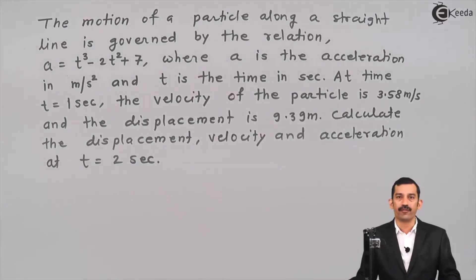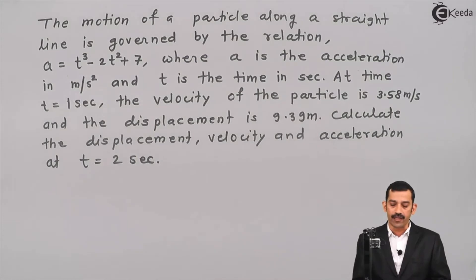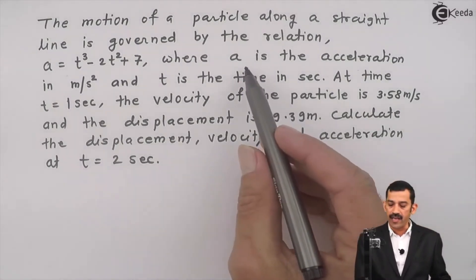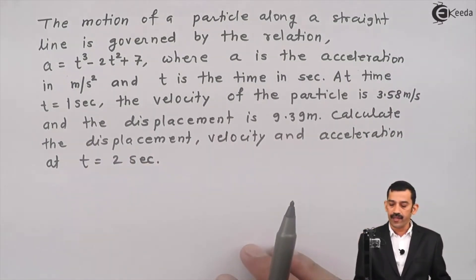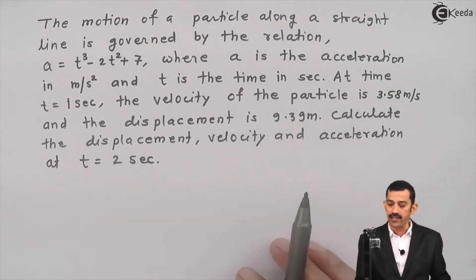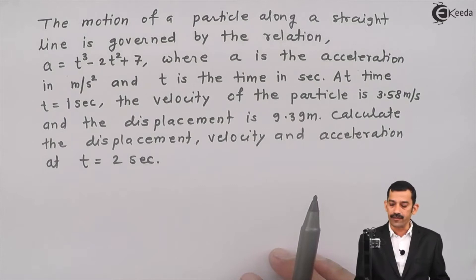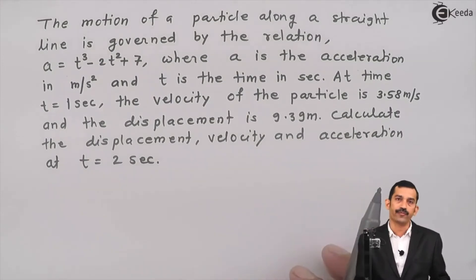Hi friends, we will solve a problem on variable acceleration. The motion of a particle along a straight line is governed by the relation a = t³ - 2t² + 7, where acceleration a is in meters per second squared and t is time in seconds. At time t = 1 second, the velocity of the particle is 3.58 m/s and the displacement is 9.39 meters. Calculate displacement, velocity, and acceleration at t = 2 seconds.